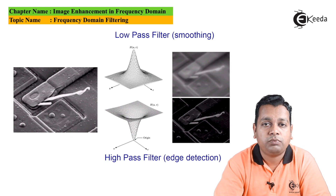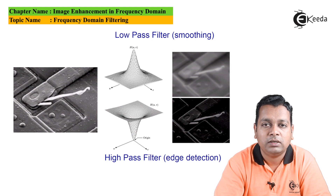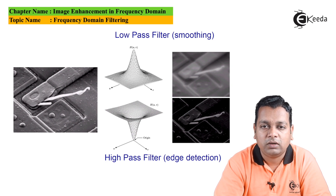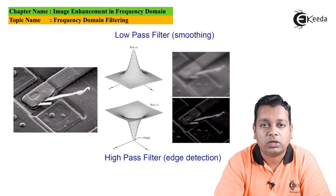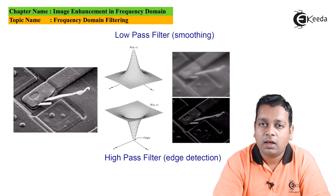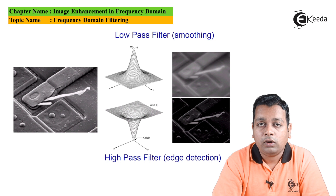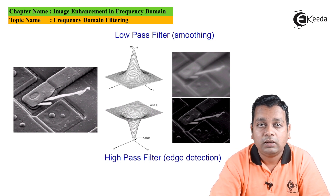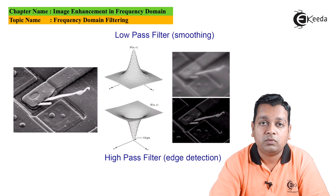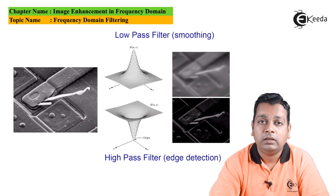The low-pass filter transfer function in three dimensions can be represented with the u-v axis and the amplitude axis, showing an upward curvature. For high-pass filtering, it is the opposite — a downward shape, with the origin at the intersection of the axes. Further, low-pass filtering can be categorized into ideal low-pass filtering, Gaussian low-pass filtering, and Butterworth low-pass filtering. Similarly, high-pass filtering can be categorized into ideal high-pass filtering, Gaussian high-pass filtering, and Butterworth high-pass filtering.